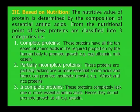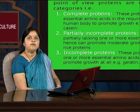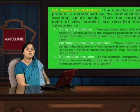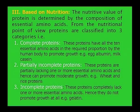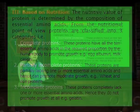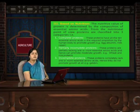Wheat and rice proteins are partially incomplete because they lack one or more essential amino acids. Incomplete proteins completely lack one or more essential amino acids; hence they do not promote growth. The example of this protein is gelatin. Incomplete proteins are not important from a nutritional point of view.